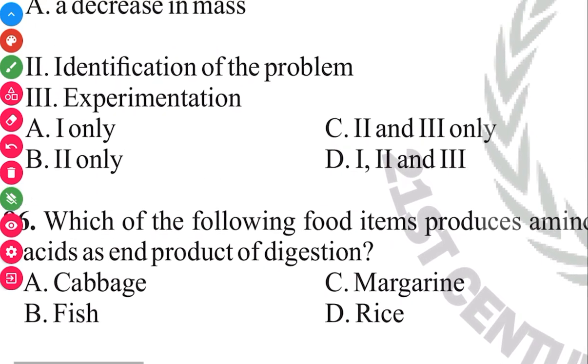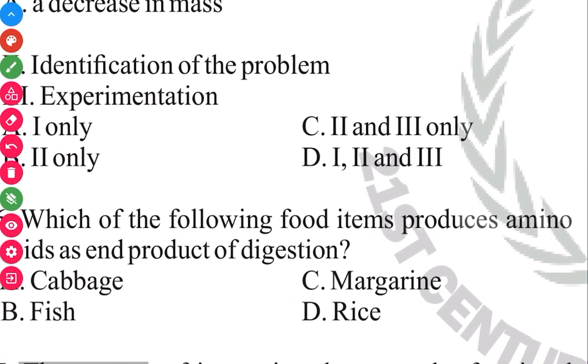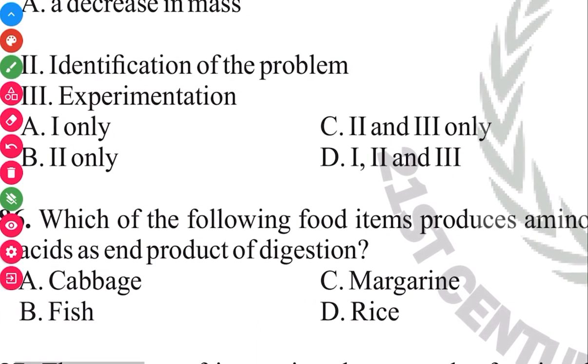Question 86. Which of the following food items produces amino acid as end product of digestion? Cabbage, fish, margarine, rice. The answer to this question in 3, 2, 1 is B, fish.